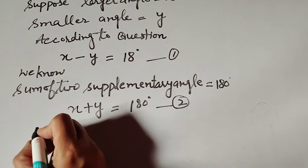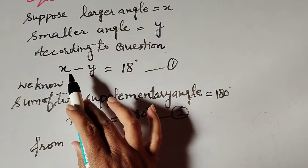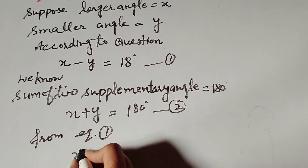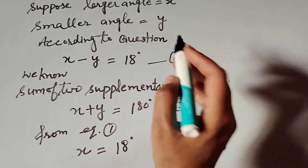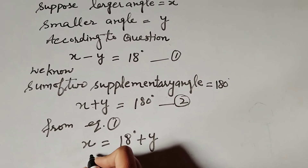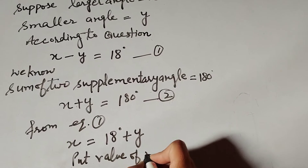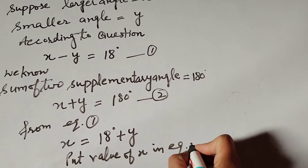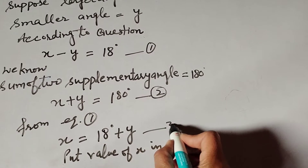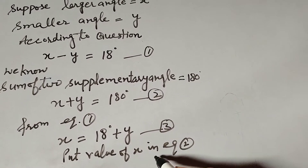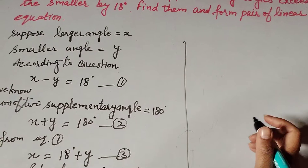Now we find the value of x. From equation number one, x is equal to 18 degrees — transposing minus y to the right-hand side it becomes plus y — so x equals 18 degrees plus y. We mark this as equation number 3, and we will substitute this value of x into equation number 2.